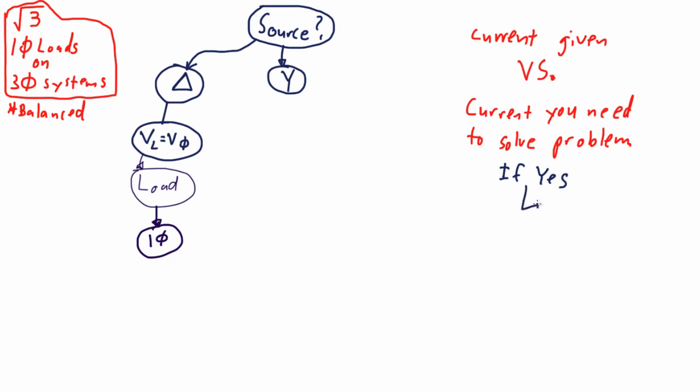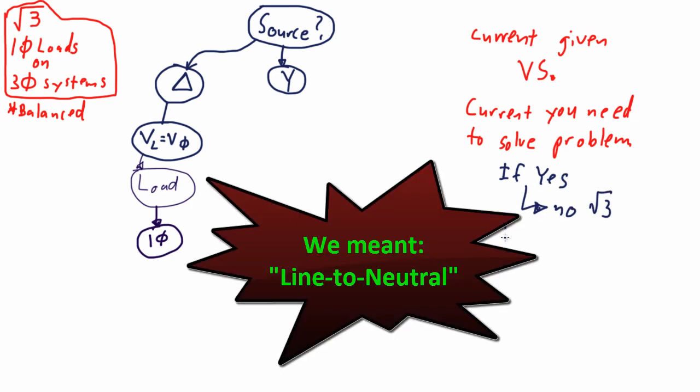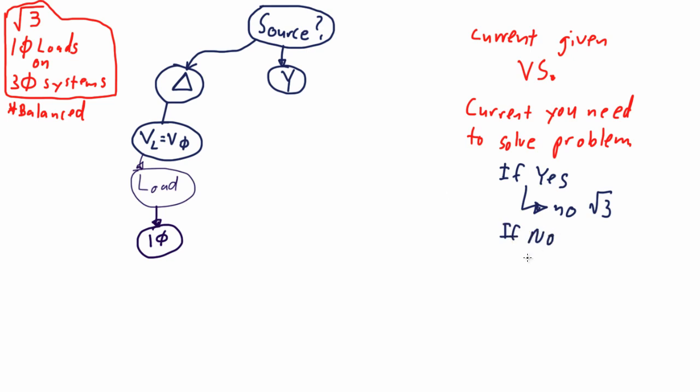What if it doesn't? Let's say the load was connected line to phase, and you were given line current.